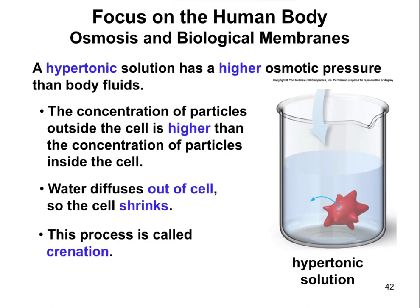A hypertonic solution is just the opposite — it has a really high concentration of stuff outside the cell. The water that's inside the cell is going to want to leave the cell to try to dilute what's on the outside because of that difference in osmotic pressure. When the water diffuses out of the cell, it causes that cell to shrink and shrivel up, and that is referred to as crenation. So hemolysis is swelling and bursting; crenation is shrinking and shriveling up.